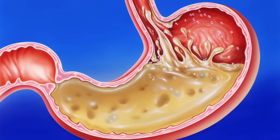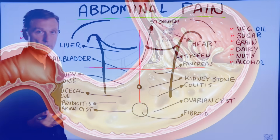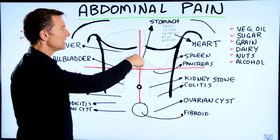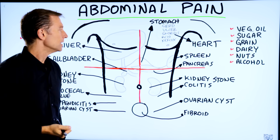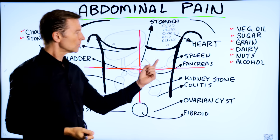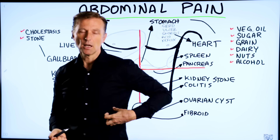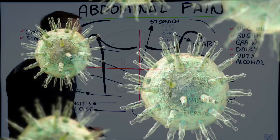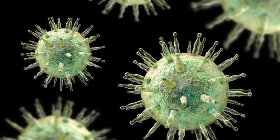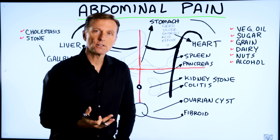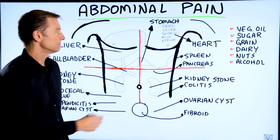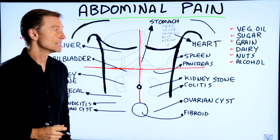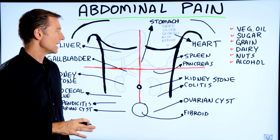Heartburn would usually be not enough acid, and the pain is usually right here in the epigastric area. If you have pain a little more to the left side, it could potentially be the spleen — maybe you have Epstein-Barr virus or a severe zinc deficiency, which affects the spleen. For any spleen problems, you want to take zinc and lower your stress.